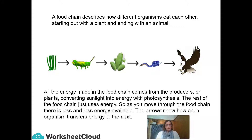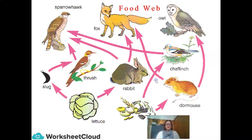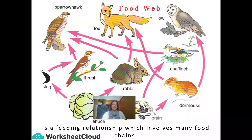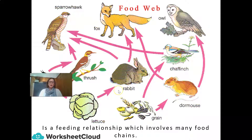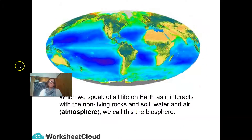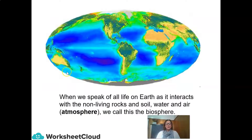The rest of the food chain just uses this energy. As you move through the food chain, there is less and less energy available. The arrows in the food chain show how each organism transfers energy to the next one. A food web is just a feeding relationship which involves many different food chains. When we speak of all life on Earth as it interacts with the non-living abiotic factors — such as rocks and soil, water and air, the atmosphere — we call this together the biosphere.